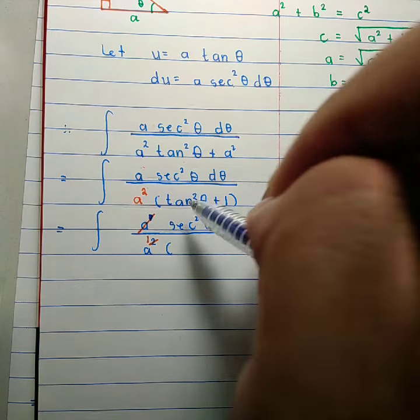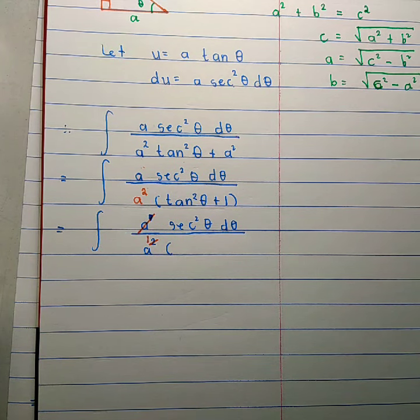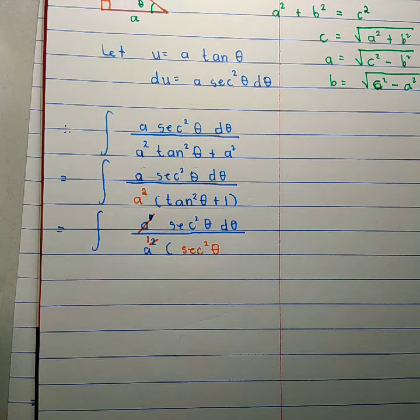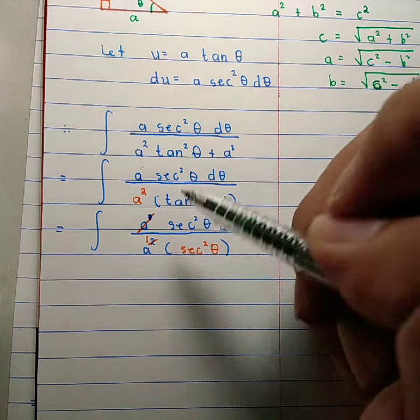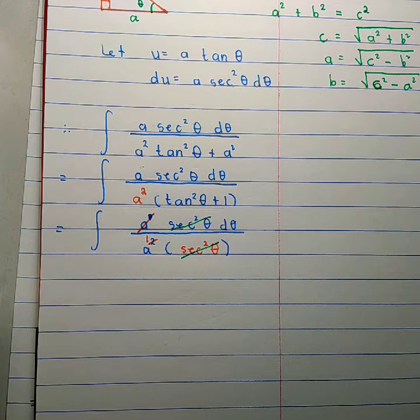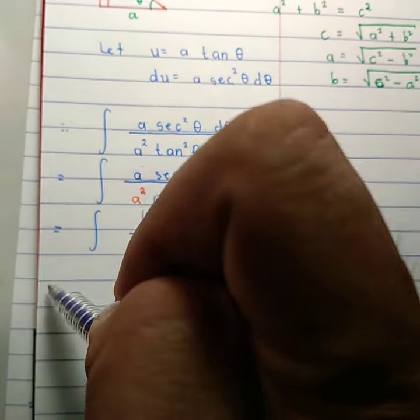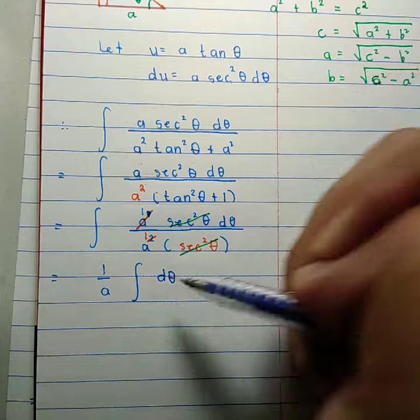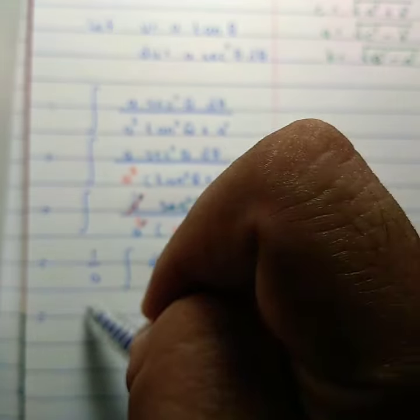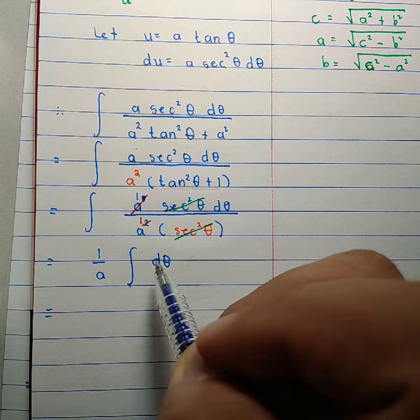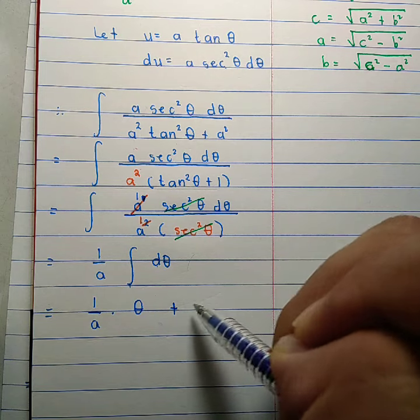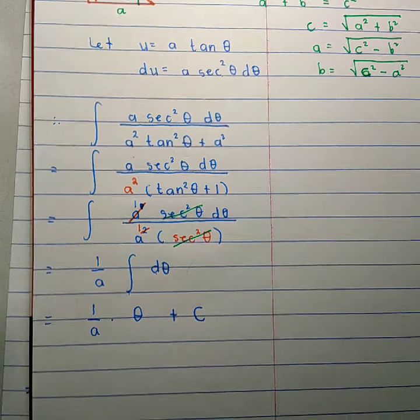Since tan²θ + 1 = sec²θ, the secant squared theta in the numerator and denominator cancel out. Also, a in the numerator and a squared in the denominator reduce, leaving 1/a. So we now have 1/a times the integral of dθ. The integral gives us 1/a times θ plus capital C. Don't forget the constant of integration.